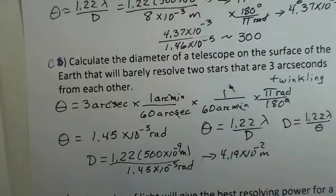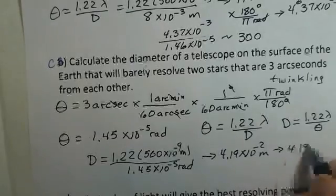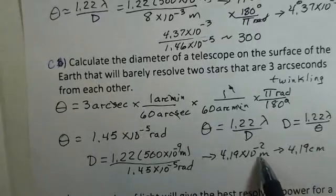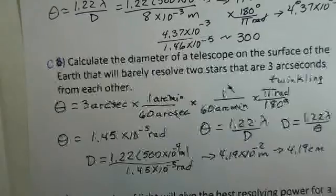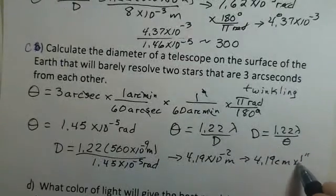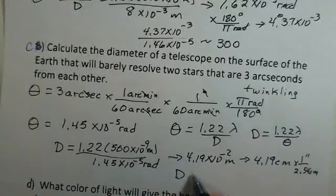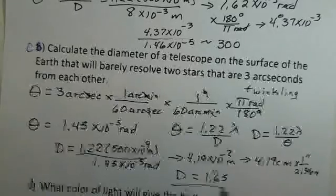This diameter is 4.19 times 10 to the minus 2 meters. English people are at a disadvantage in knowing what that really means. Let's first go to centimeters: 4.19 centimeters. Going from meters to centimeters involves 10 to the minus 2. Then let's convert to inches with 1 inch, 2.54 centimeters. What I came up with, the diameter here, 1.65 inches.